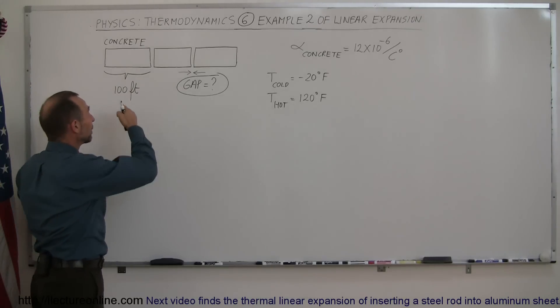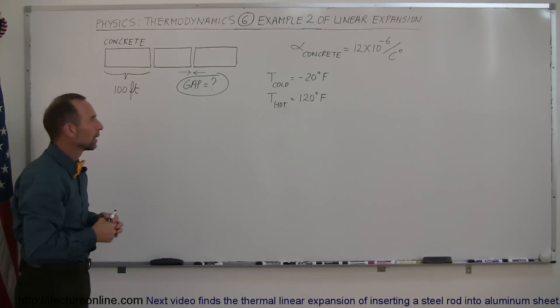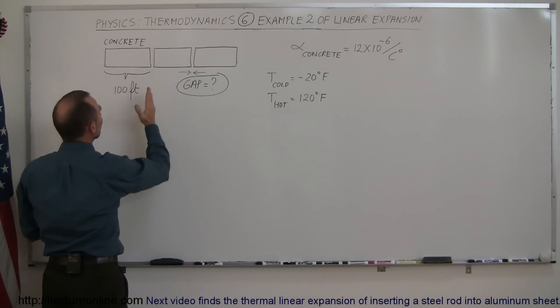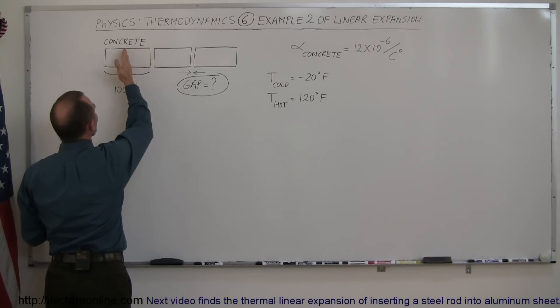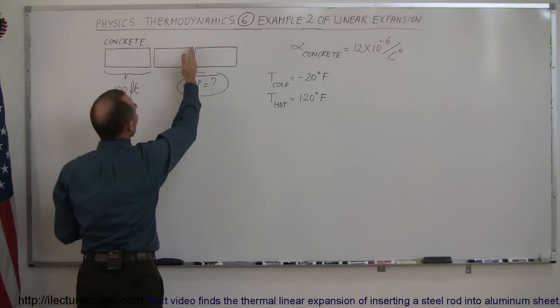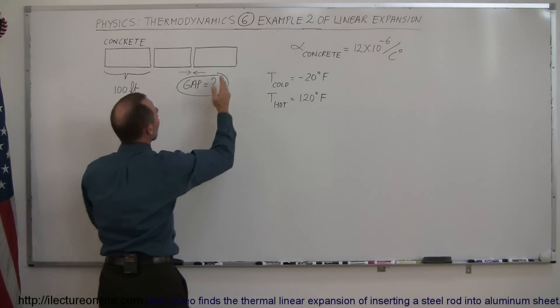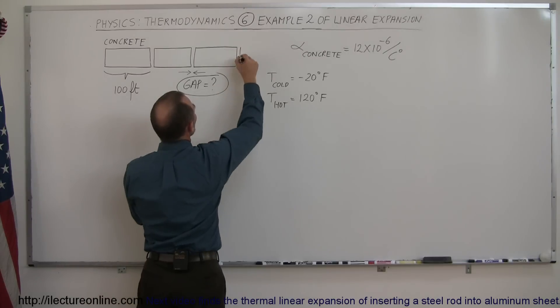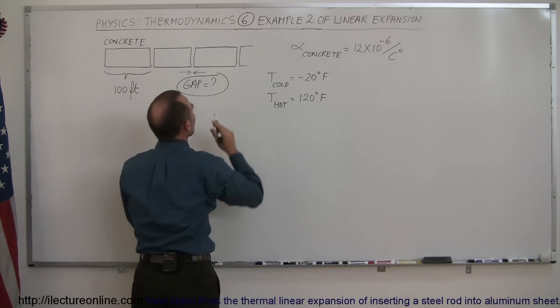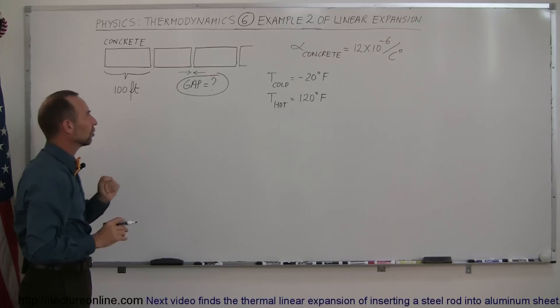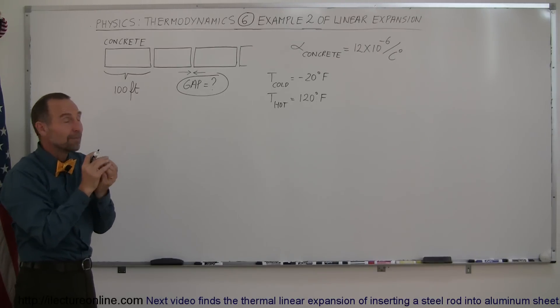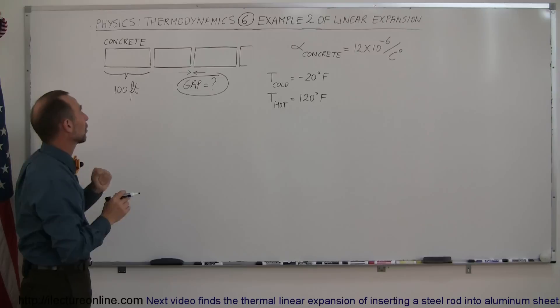Now since you have a gap on each side, how do you deal with that? Well, it turns out if we simply associate each gap with one section, so this gap is associated with the change in length here, and this gap is associated with the change in length there, and so forth, we only have to worry about one gap per section. So the change in the width of the gap should equal the maximum change in length of one of those sections.